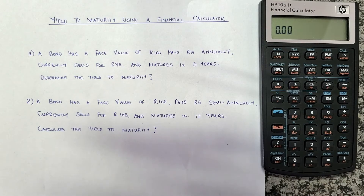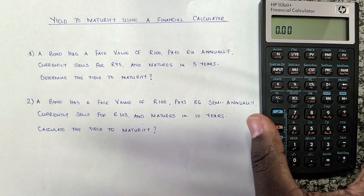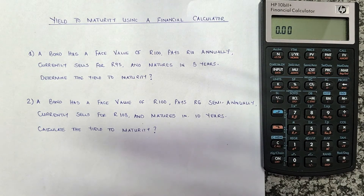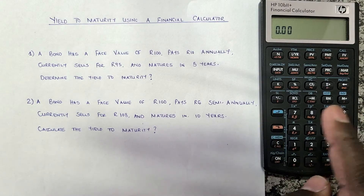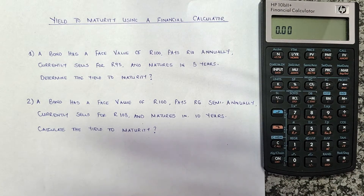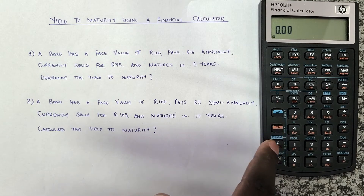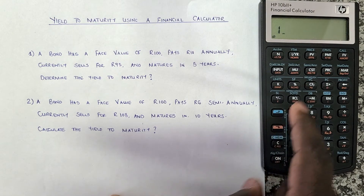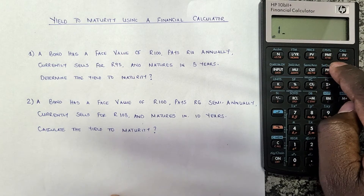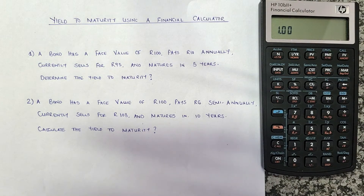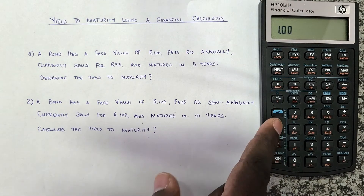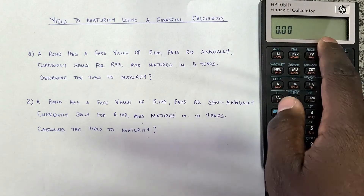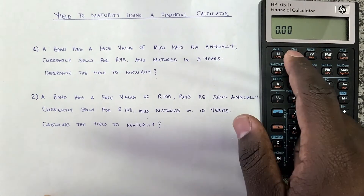It's very important to know the payment period. We're told it pays 10 rand annually, so we must make sure our calculator is compounded annually — once per year. By default this calculator is compounded 12 times per year; you can verify this by pressing the orange button and then C, which shows 12 per year. To change it to one, press 1, then the orange button, then PMT — under PMT it says 'payments per year'. Press the orange button and C again to confirm it now shows 1 per year.